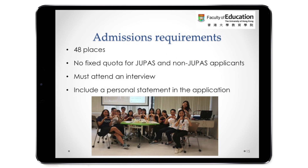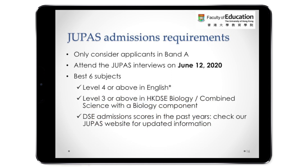Now let's talk about admissions requirements. This year we are expecting to take 48 students. There is no fixed quota for JUPAS or non-JUPAS applicants. All applicants have to attend an interview and submit a personal statement. For JUPAS admissions, only applicants who put our program in Band 1 choices will be considered. For the best six subjects, they need Level 4 or above in English, and Level 3 or above in Biology or combined science with a biology component. For DSE scores from previous years, please check our website for updated information.